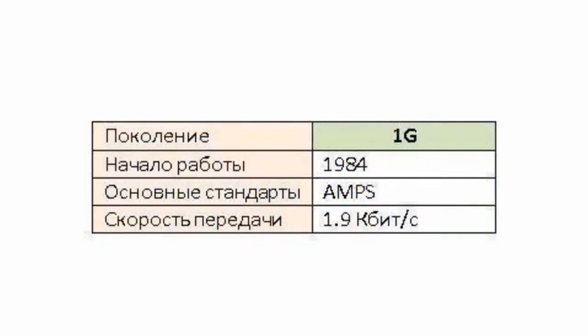As far as the English word 'generation' starts with G, each of the generations is called by its serial number followed by the letter G. Thus, the first generation, the 1G standard, was being developed since the early 70s and was implemented in the mid-80s. It was an analog connection.